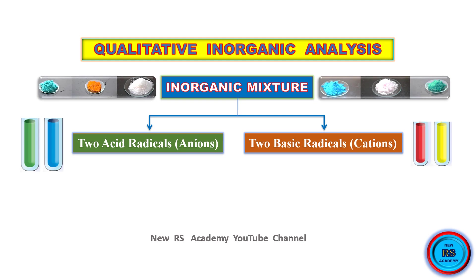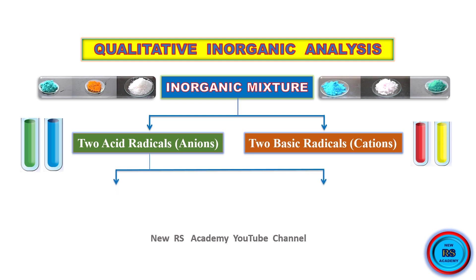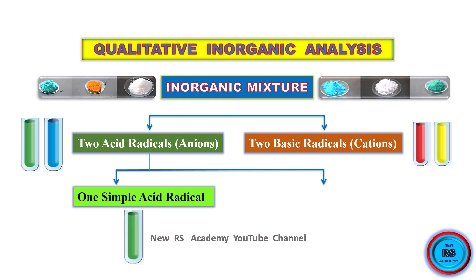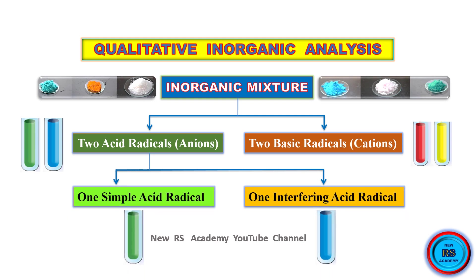Acid radicals have negative charge and basic radicals have positive charge. The two acid radicals contain two parts. First one is simple acid radical, another one is interfering acid radical. The two basic radicals come from various groups.